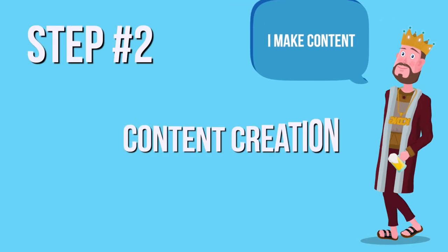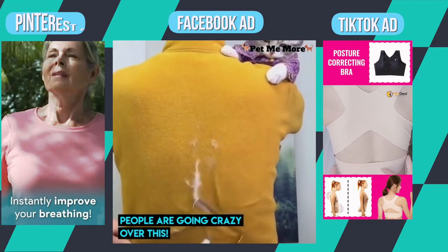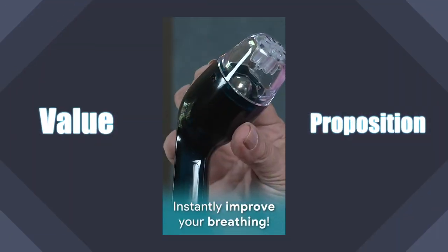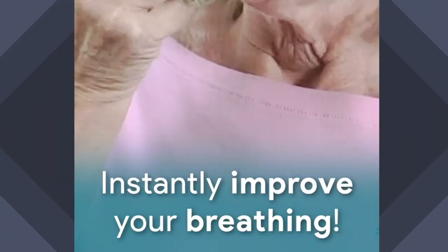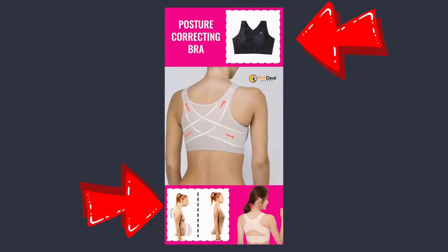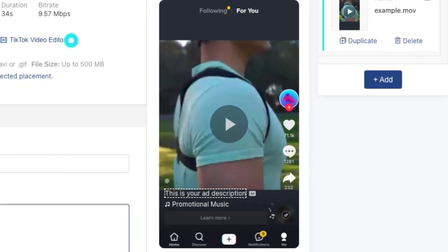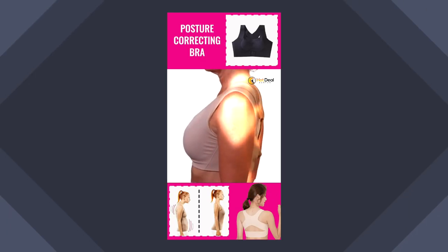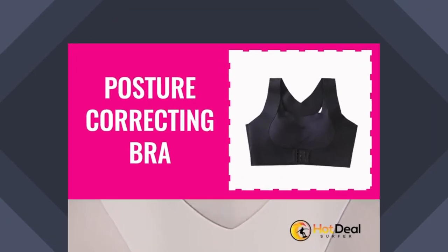That brings us to step number two, which is putting together the content. TikTok ads are very different than Facebook ads, but they generally have a similar structure to Pinterest ads. It's incredibly important to make sure that your ad has a high value proposition within the first three seconds. Due to TikTok's layout, it's also very important to ensure your ad has a block at the top and at the bottom of your video. On the top block, place text or an image of the product — ideally both — clearly describing and showing the product you're advertising.